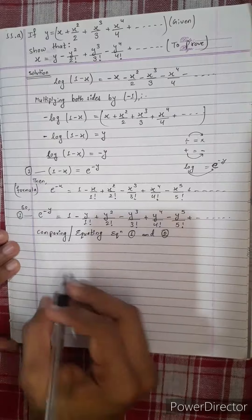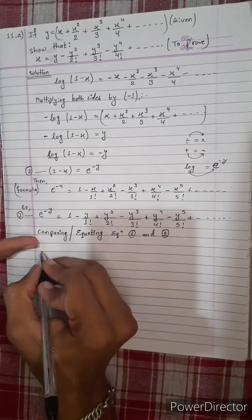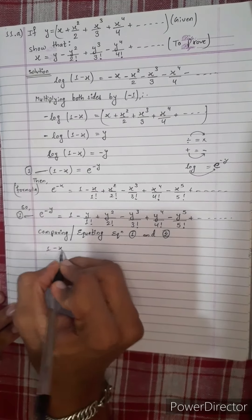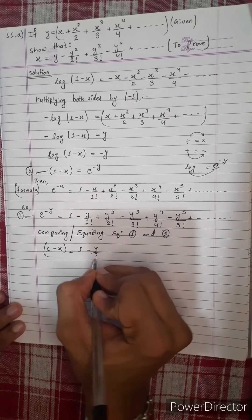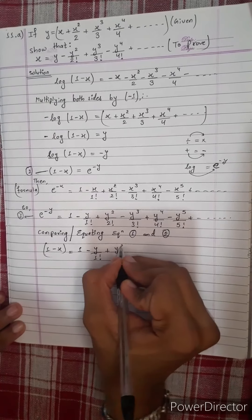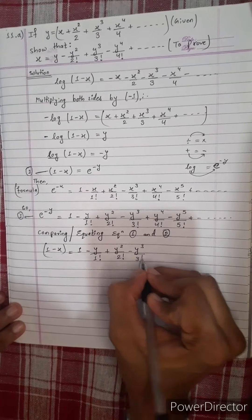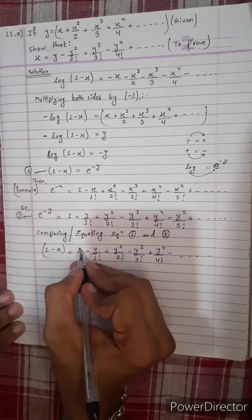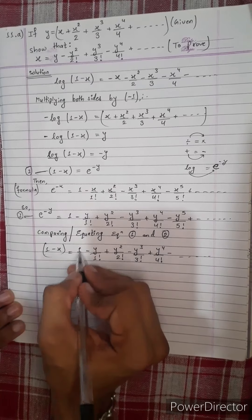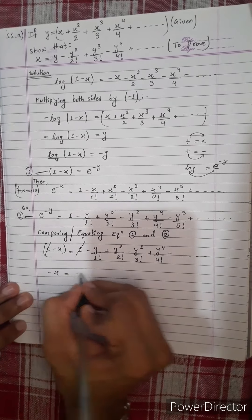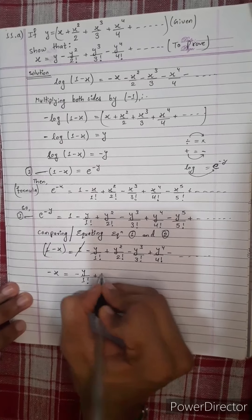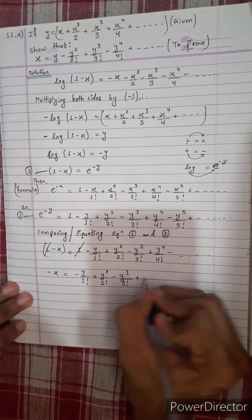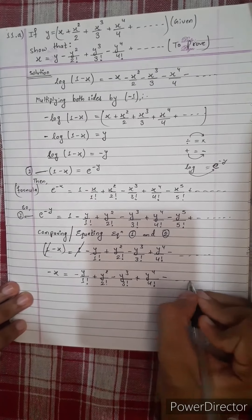Setting 1 minus x equal to 1 minus y by 1 factorial plus y squared by 2 factorial minus y cubed by 3 factorial plus y to the power 4 by 4 factorial minus dot dot dot. Therefore, minus x equals minus y by 1 factorial plus y squared by 2 factorial minus y to the power 3 by 3 factorial plus y to the power 4 by 4 factorial minus dot dot dot.